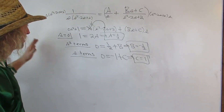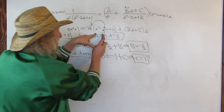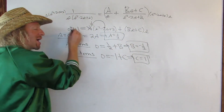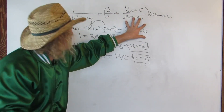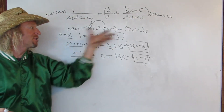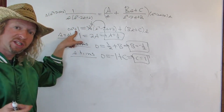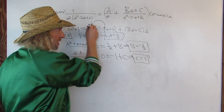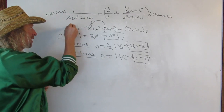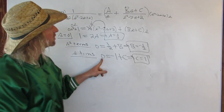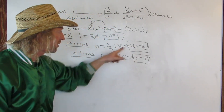Recap: we wrote the partial fractions, multiplied by the denominator, the s's cancelled. We plugged in zero to find A. Then there was nothing else to plug in, so we equated coefficients. We looked at s squared terms — coefficient zero on the left, one half plus b on the right — solved for b. Then the s terms — coefficient zero on the left, negative one plus c on the right — solved for c. Now we have all our answers.